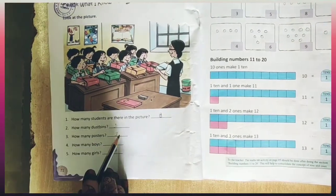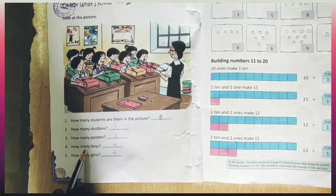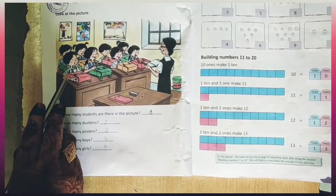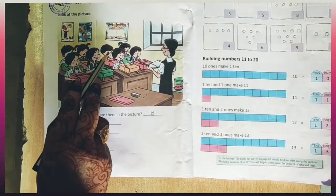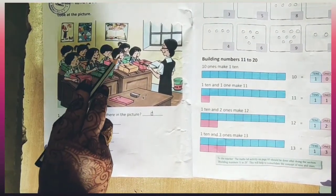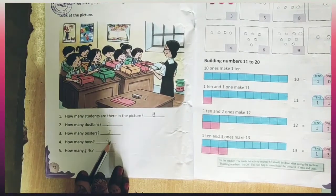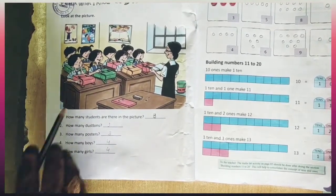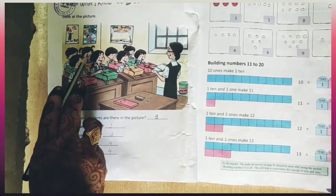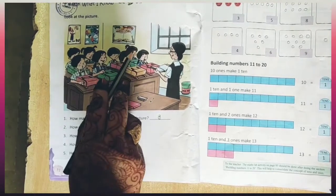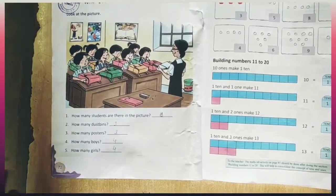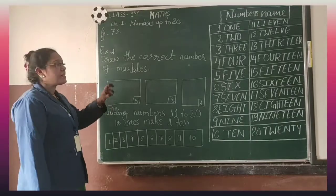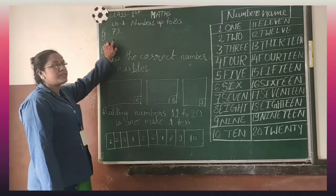Answer is 3. How many boys? Count it: 1, 2, 3, 4. Total is 4. How many girls? Count it: 1, 2, 3, 4. Total is 4.